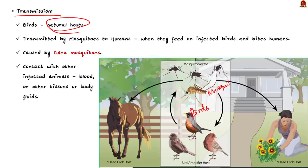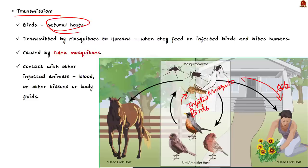Mosquitoes become infected when they feed on infected birds, and once infected they transmit the virus to humans through mosquito bites. Transmission to humans is mainly caused by the Culex mosquito, making West Nile Virus a mosquito-borne disease. The virus can also spread through contact with other infected animals, especially their blood or other tissues. There is no documentation of casual human-to-human transmission.